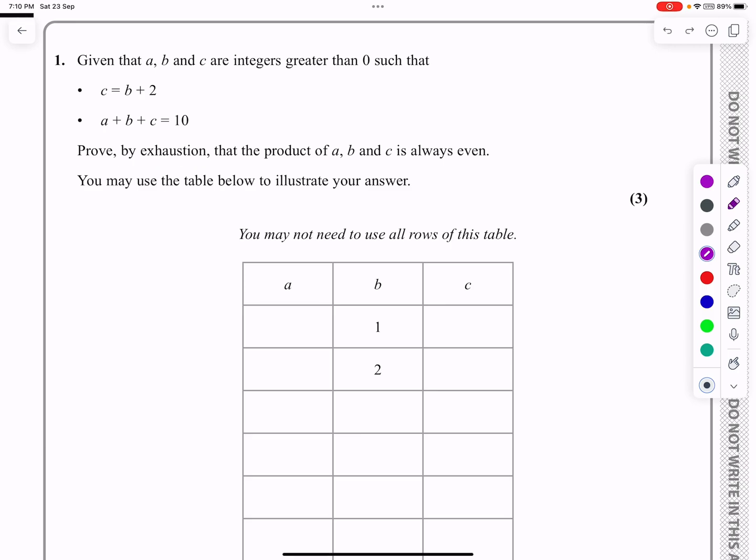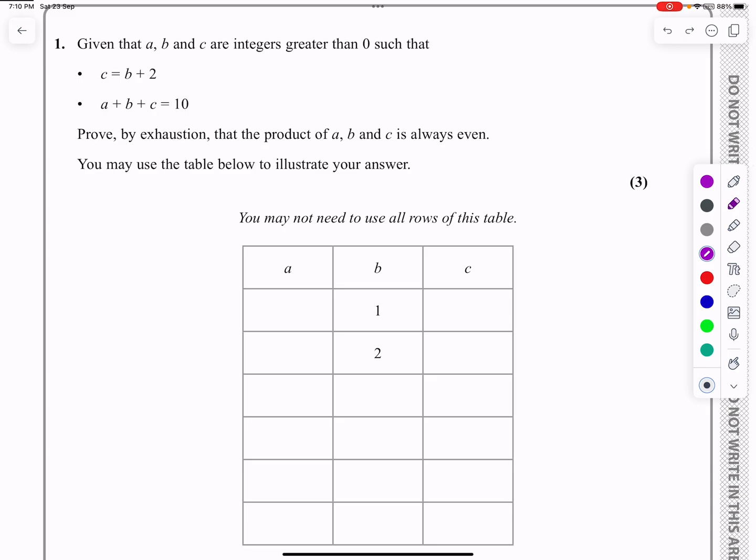Proof by exhaustion normally means you break it up into smaller cases and prove each case separately. That confused me a little bit because I wasn't sure what the cases were going to be. I can see that A, B and C are all integers greater than zero. C is always B plus 2, and the sum of A plus B plus C equals 10.